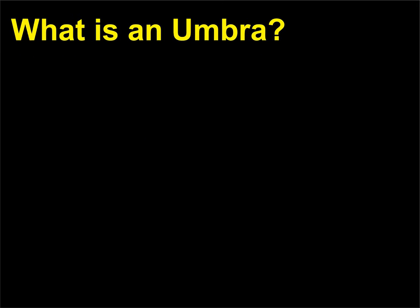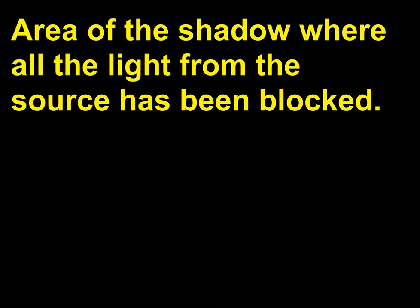What is an umbra? The umbra is the area of the shadow where all the light from the source has been blocked.